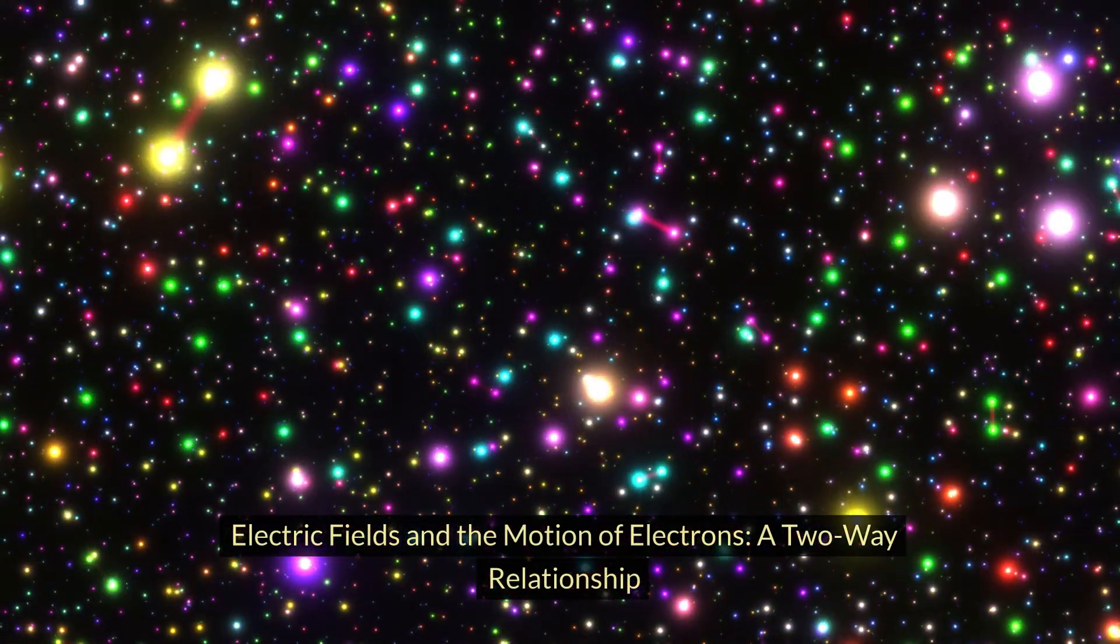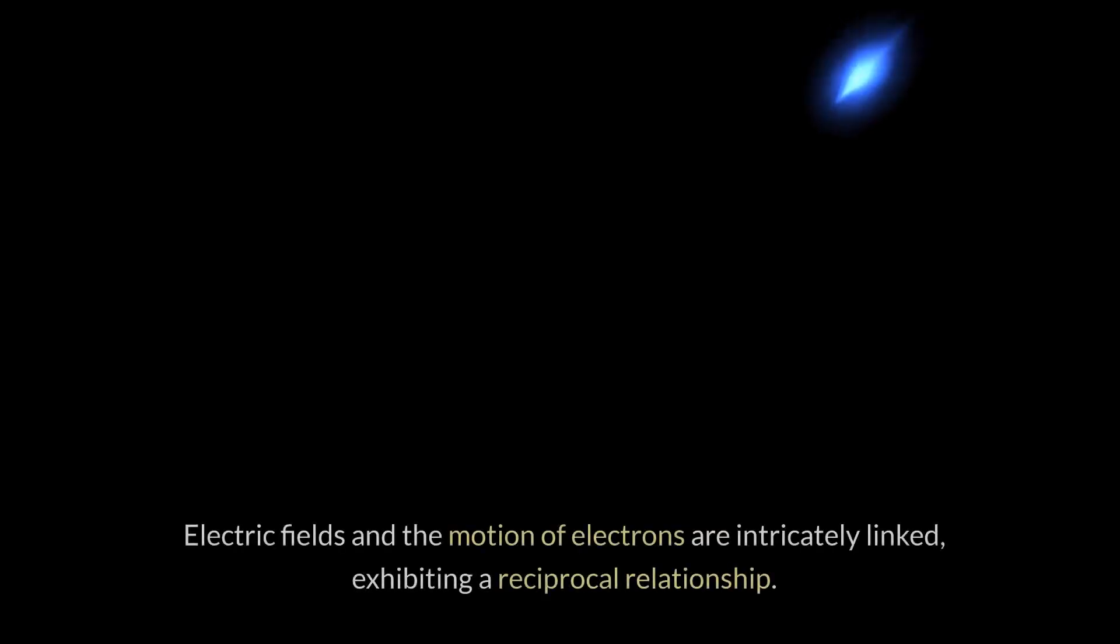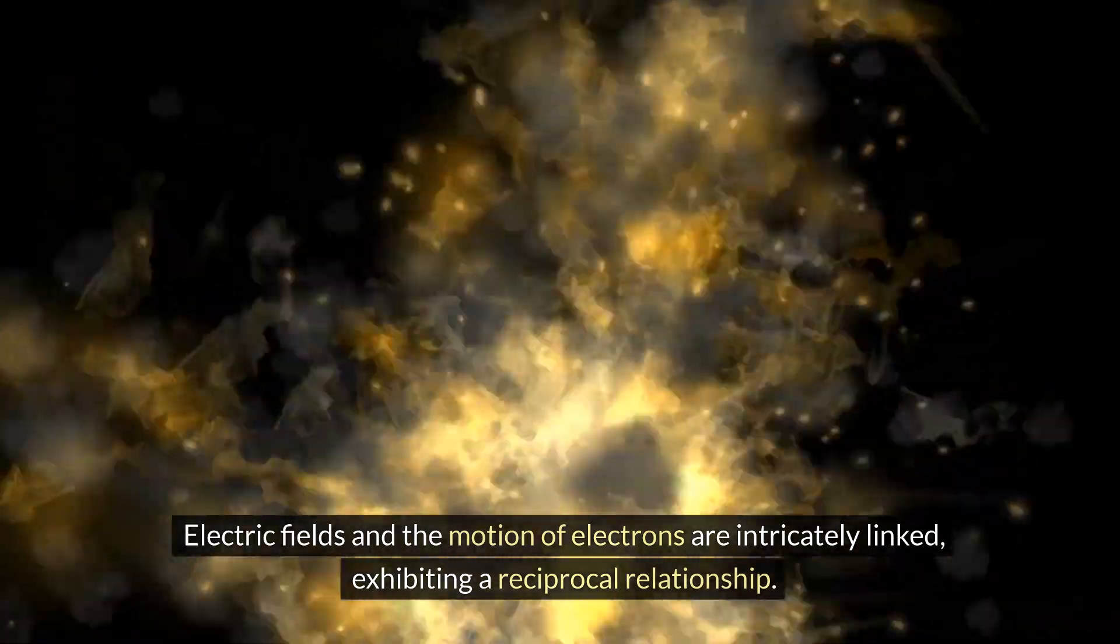Electric fields and the motion of electrons: a two-way relationship. Introduction. Electric fields and the motion of electrons are intricately linked, exhibiting a reciprocal relationship.